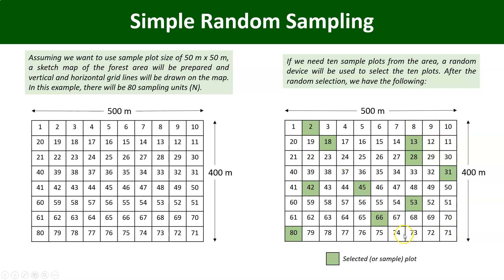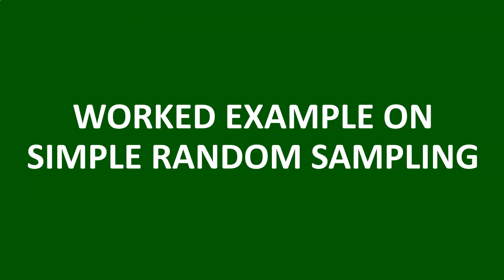That way the enumeration is completed. I will not bother to visit plots like 21, 10, or 70 — I only navigate to the plots I have to sample. Doing the planning on paper helps guide my movement in the field. That's the way to implement simple random sampling. In the next video we'll be looking at a worked example on simple random sampling — see you then, thank you.